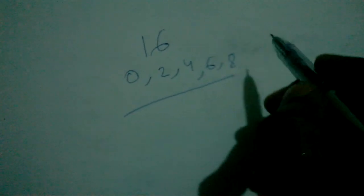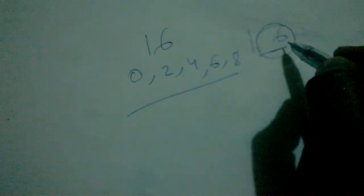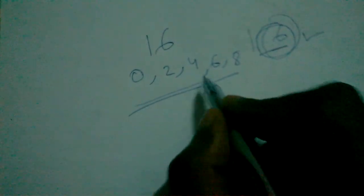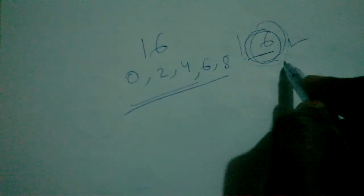The rightmost digit in 16 is 6. If any one of these numbers is not present in the rightmost digit, then this number is considered an odd number.